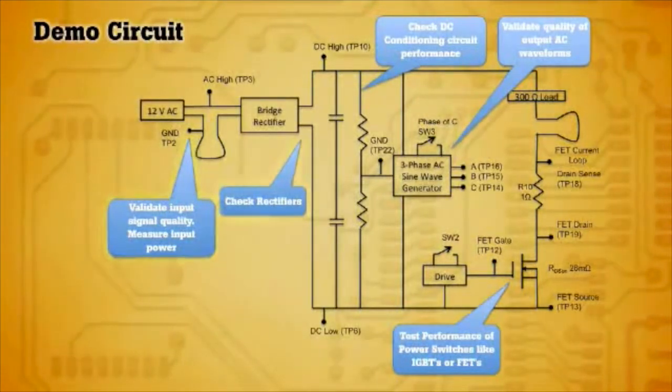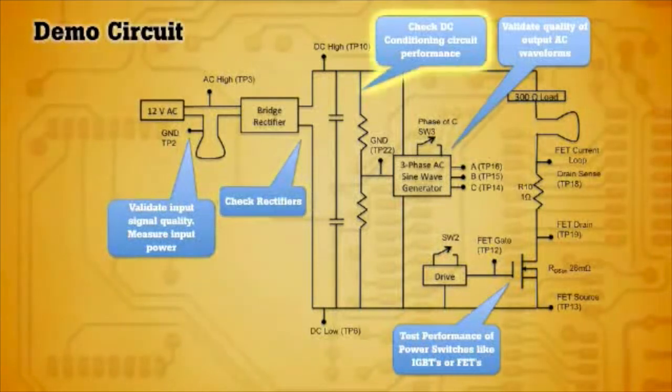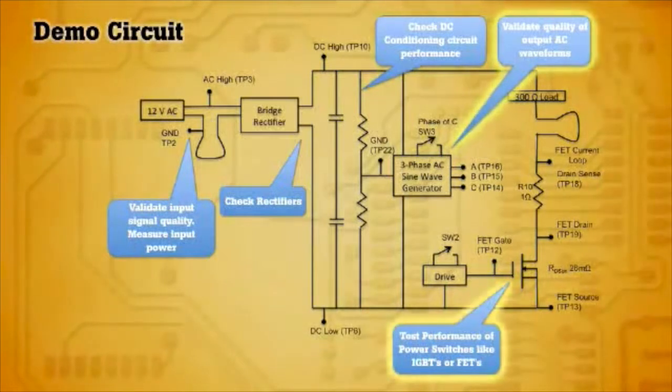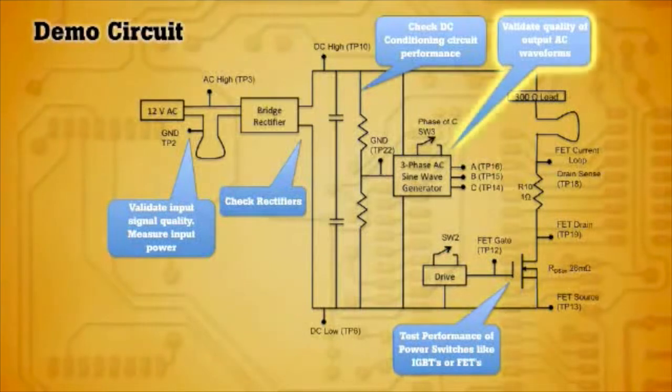The AC goes through a bridge rectifier creating a DC bus that will then be used in the inverter circuit. Switches or high-powered switches modulate this DC bus to provide an AC waveform on the output of the board.